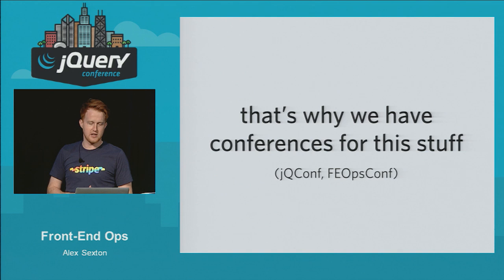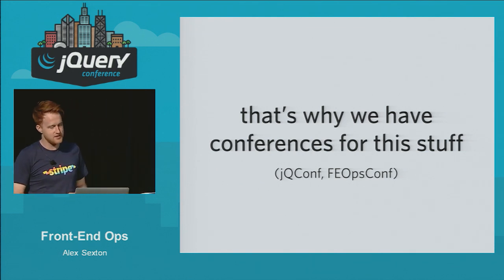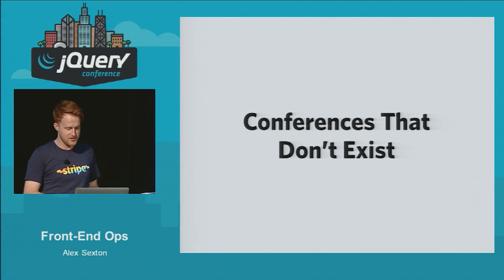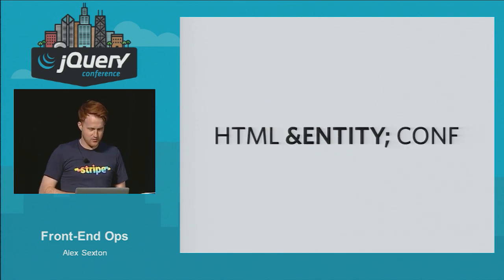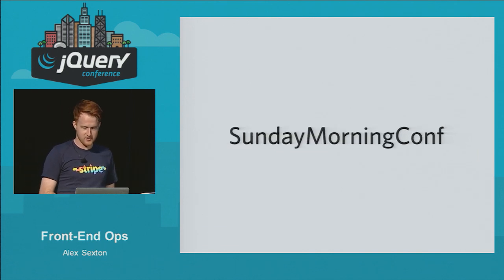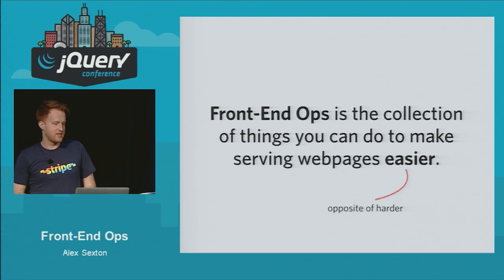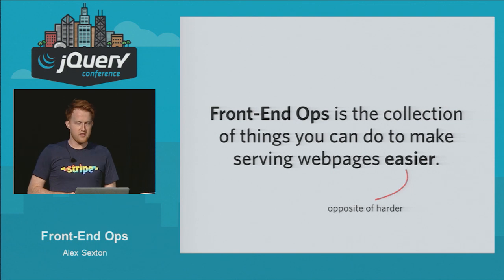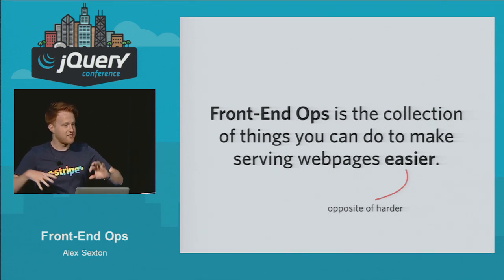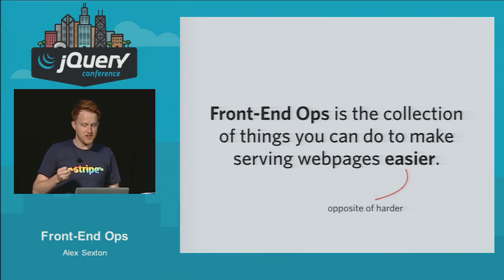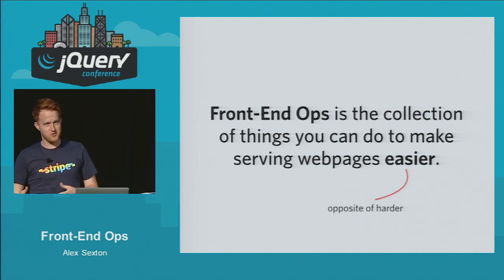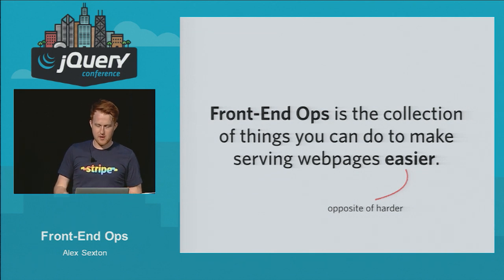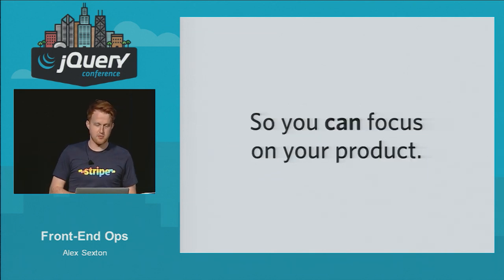Front-end ops is the collection of things you can do to make serving web pages easier. You write things once, and then it becomes a lot easier to do the right thing — serve them quickly and correctly. It's the act of building in performance and developer happiness by default instead of as an afterthought. You can make computers do the work so you can focus on your product.